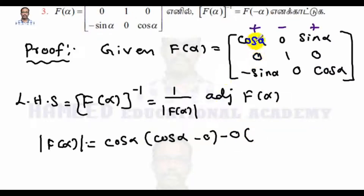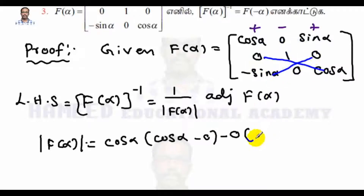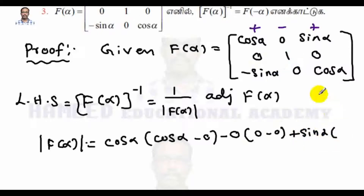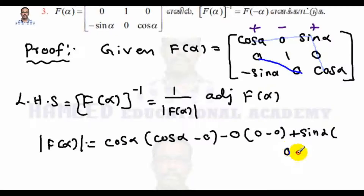The zero is the first row, second column element. That minor gives 0 times cos α minus (-sin α) times 0, so we have 0 minus 0. Next, sin α is the first row, last column element with default sign plus, so plus sin α. That minor — first row, last column removed — gives 0 times (-sin α) minus 1 times 0, so minus sin α times that result gives minus sin²α wait, we get plus sin α into (-sin α).